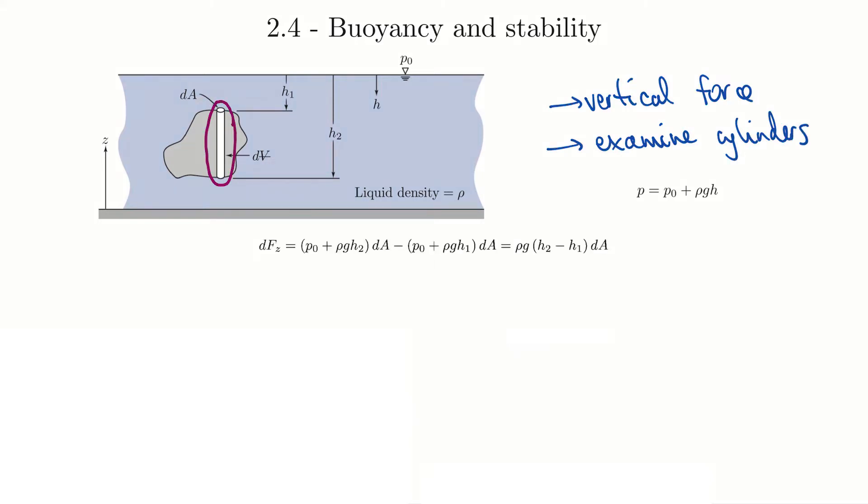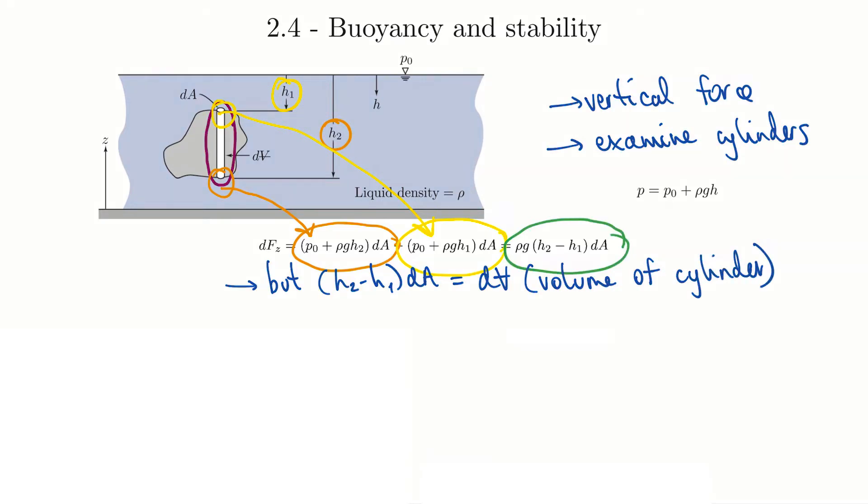So DFZ, that's the differential force acting on this cylinder. To calculate that, we're going to have the pressure force that's pushing up on the bottom of the cylinder, and then the pressure force that's pushing down on the top of the cylinder. So that's been broken out here. The force at the bottom we calculate at H2. Subtract the force that's acting at the top, at H1 there. So when we group that, we have rho G times H2 minus H1 times DA. But again, we recognize that if we integrate H2 minus H1 times DA, we end up with the volume of the cylinder.